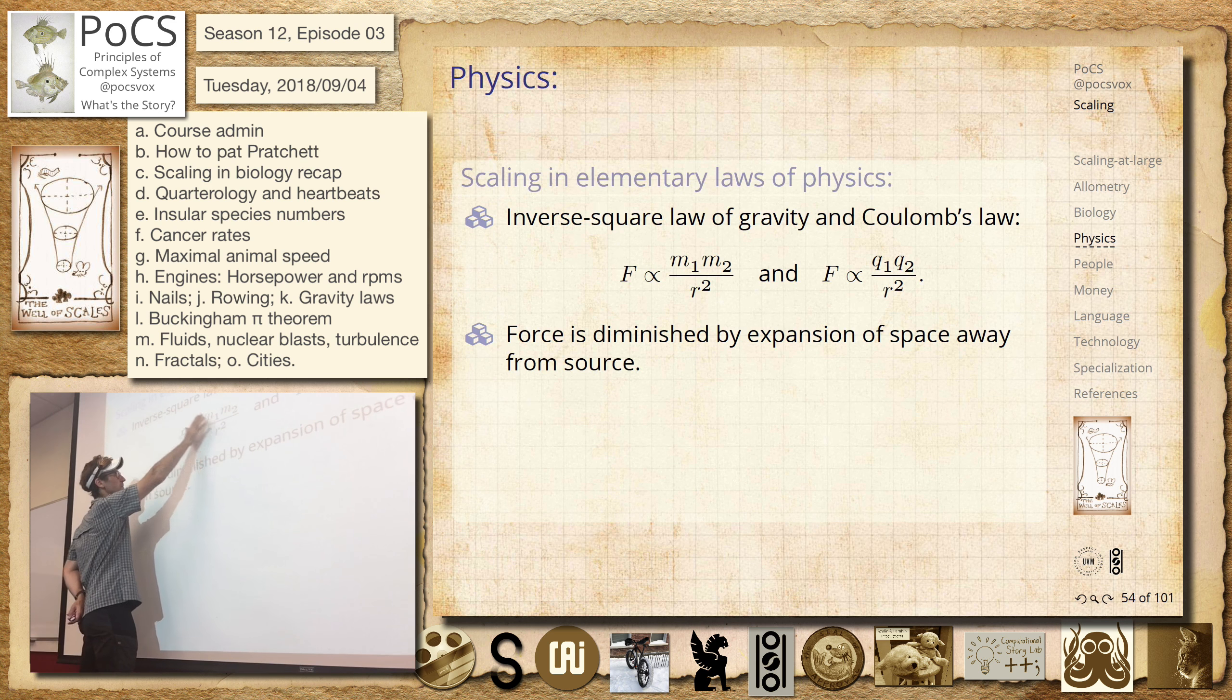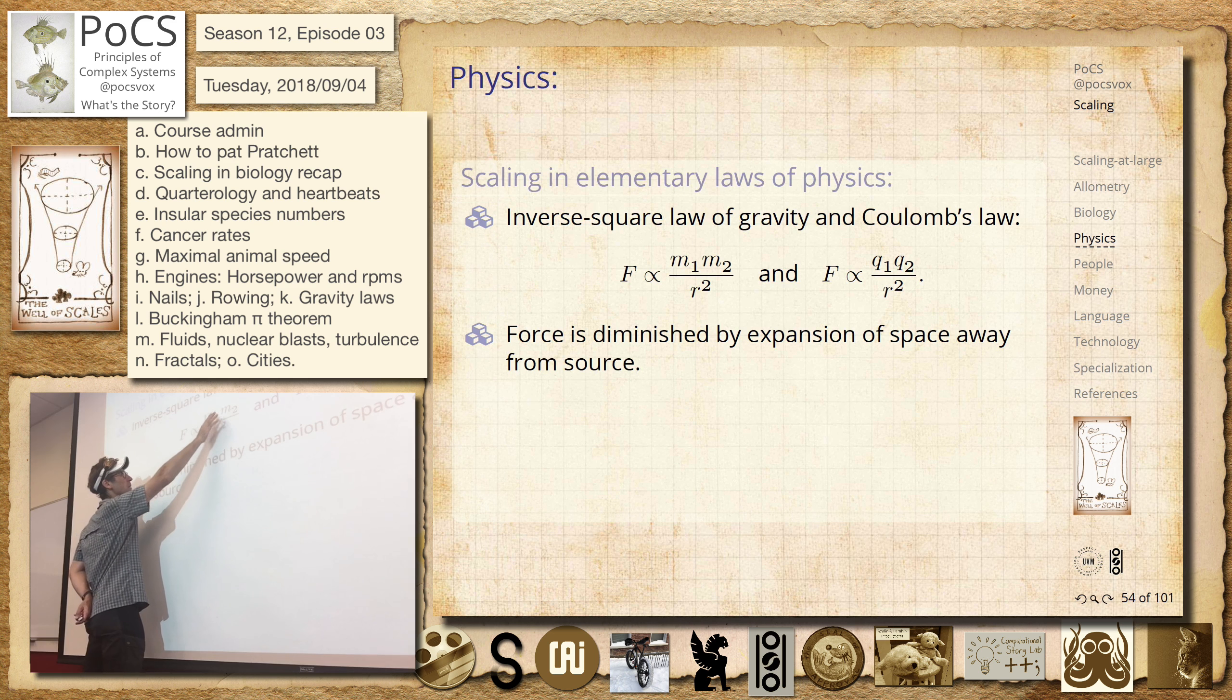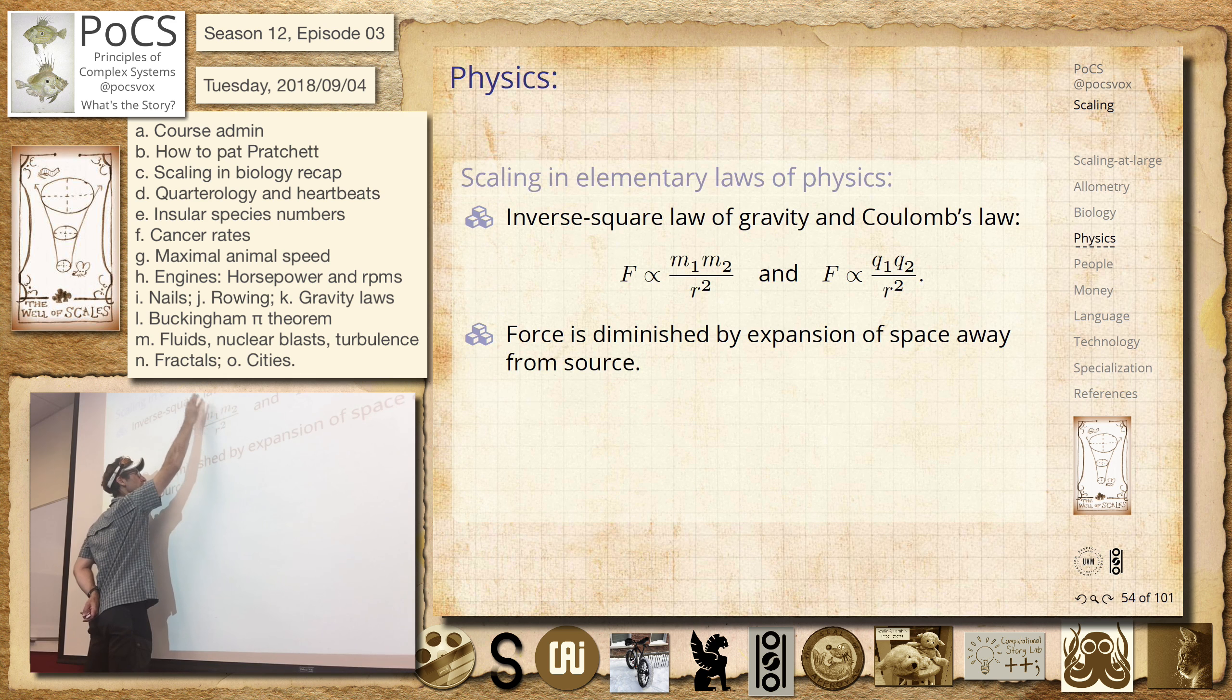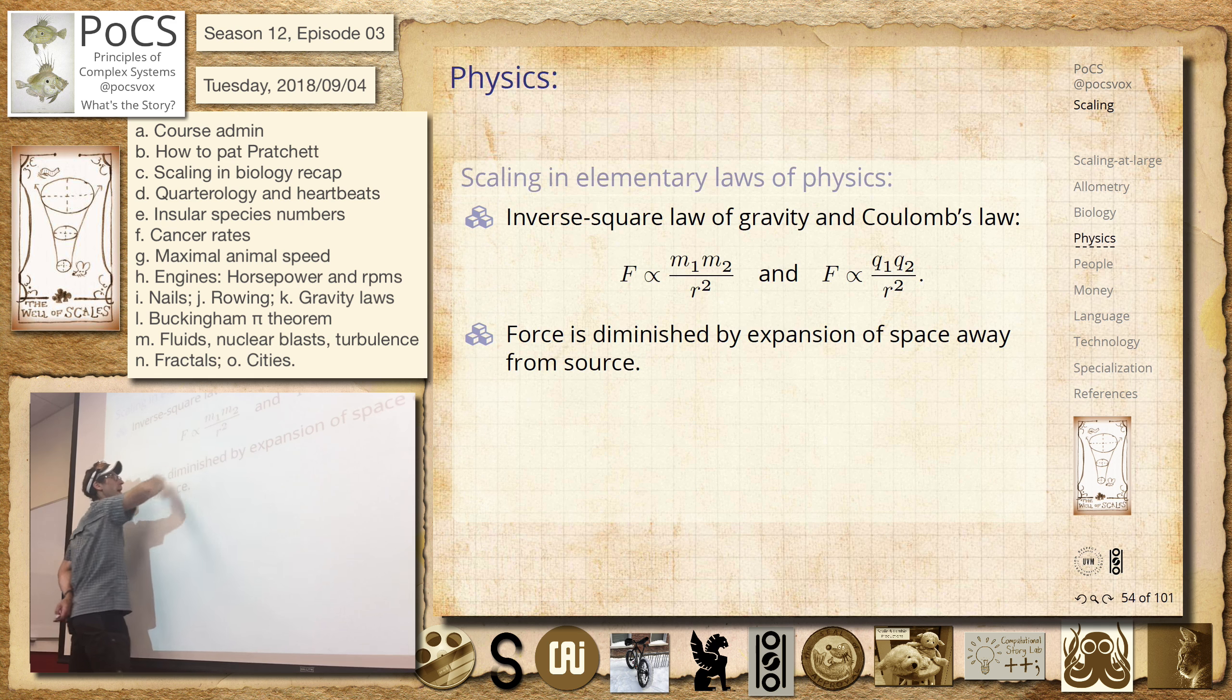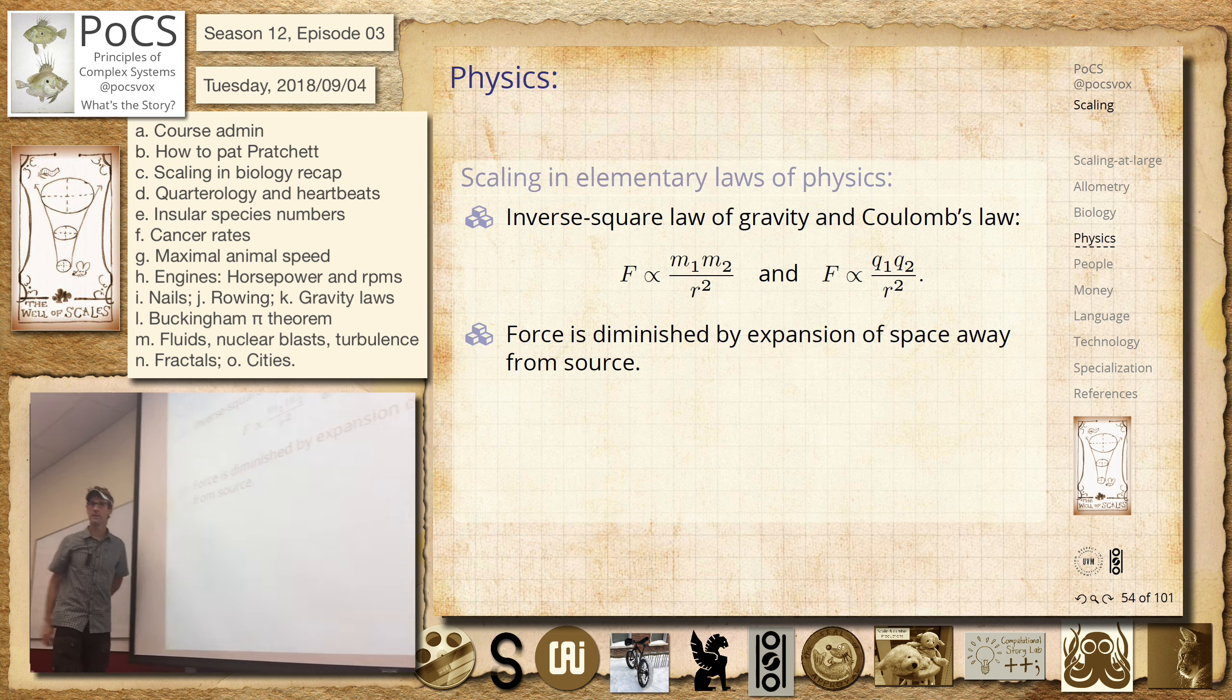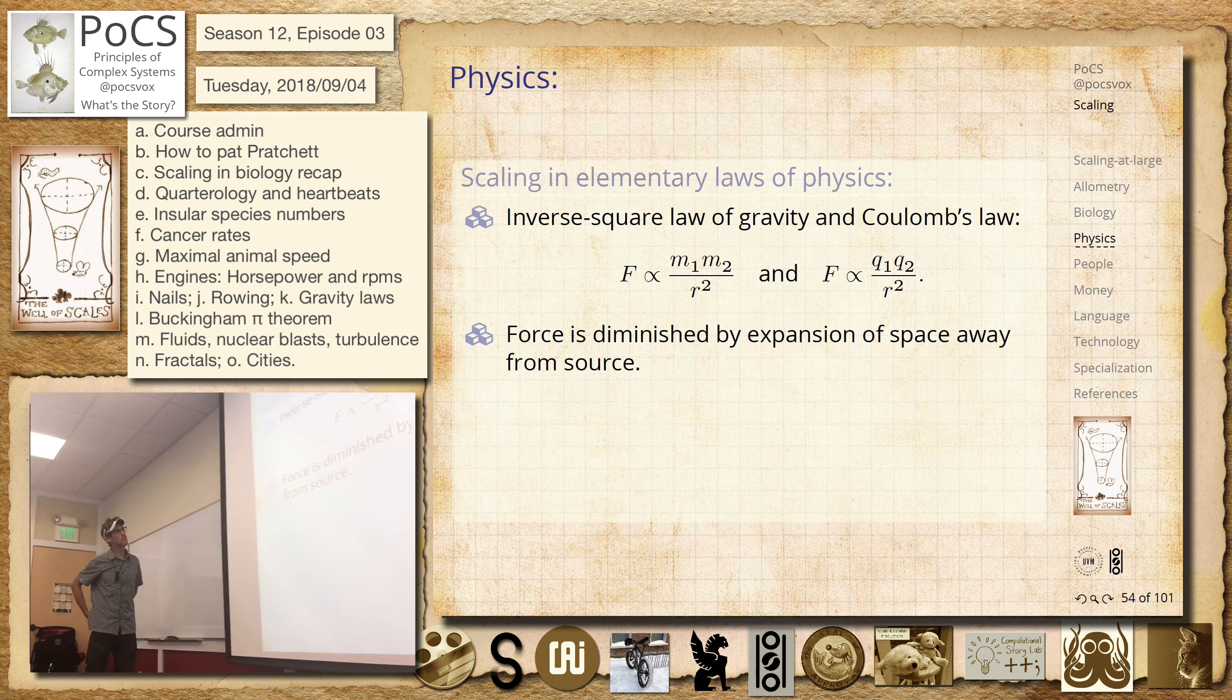The force of gravity between two objects, mass 1 and mass 2, just multiply these so it increases linearly, right? This is a power of 1 here, a power of 1 here. And we live in three dimensions, so that's what the story is here. This is decreasing like an inverse square law.